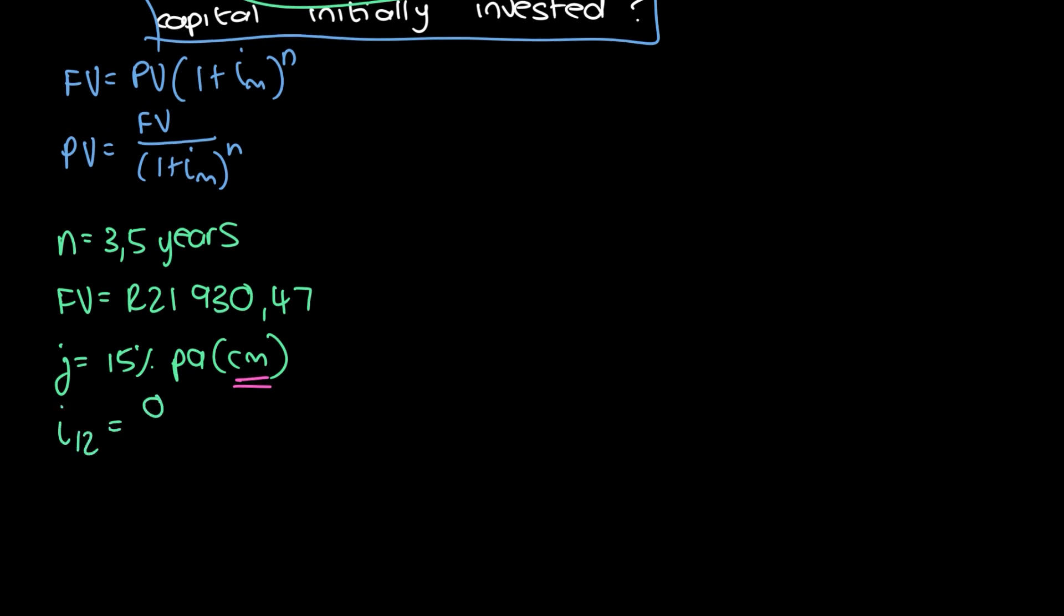So that's going to be the nominal interest in decimal fraction notation. In other words, 15 divided by 100. And then we're going to divide it by the number of months in a year so we can get the interest that occurs per month. So now we have i sub 12.